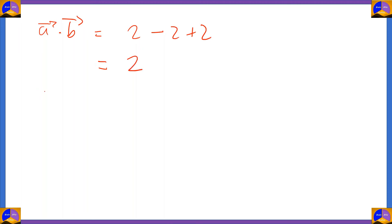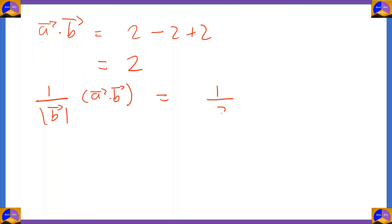So the value of the dot product is 2. Putting it in the formula: 1 by modulus of vector b times a bar · b bar = (1/3) × 2 = 2/3. So 2/3 is the projection of vector a on vector b.